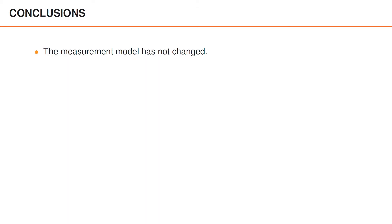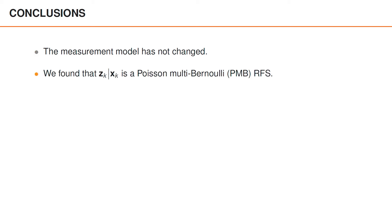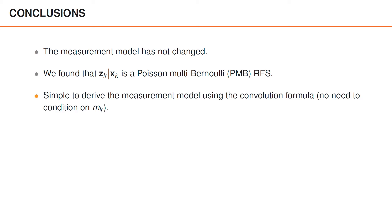To summarize: objects can still only generate at most one measurement, clutter measurements are still assumed to be a Poisson point process, and the measurement model is fundamentally the same as before. Under these assumptions, zk given xk is the union of a Poisson random finite set and a multi-Bernoulli random finite set, which is what we refer to as a Poisson multi-Bernoulli random finite set. One key difference is that it is essentially trivial to derive the measurement model using the convolution formula, elegantly avoiding the need to obtain a prior model for theta k and mk and use the law of total probability. We also noted that it is easy to adjust the derivation to handle extended objects where each object can generate multiple measurements.